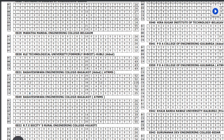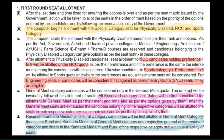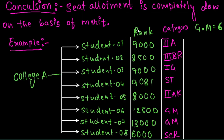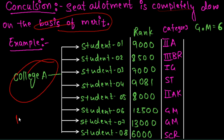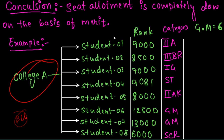If you follow general merit, you will get the best results. This is the first conclusion. Seat allotment is completely dependent on merit. Let me give you an example with a college.